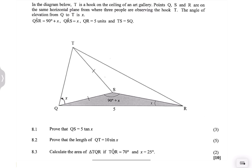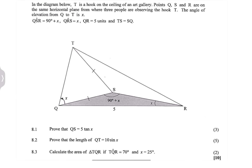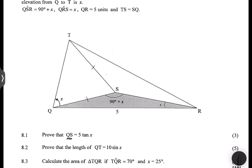Now remember, when it comes to the approach — and by the way, if you haven't watched my longer videos on this particular section, please do yourself a favor and do that. It's under the trigonometry playlist. Now, the trick here is to always start on the side where you've got the most information, or the triangle that has the most information. They want us to find QS — we should prove that QS is 5 tan X. Which triangle has got the most information? It's actually triangle QSR.